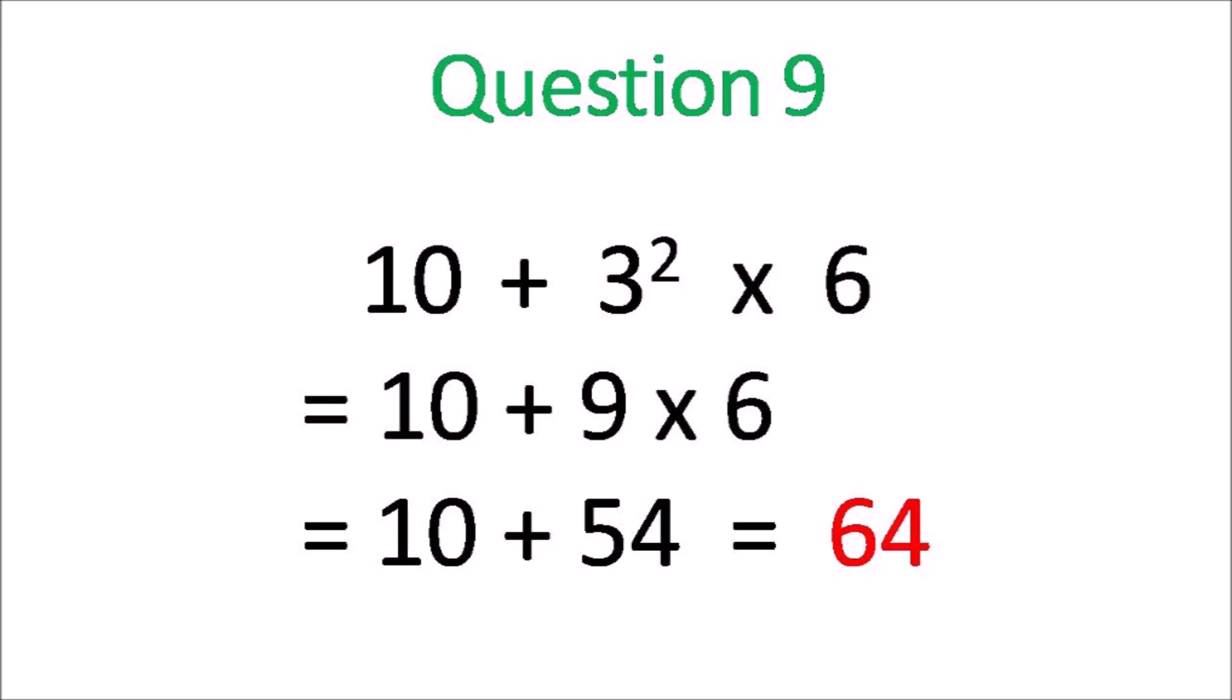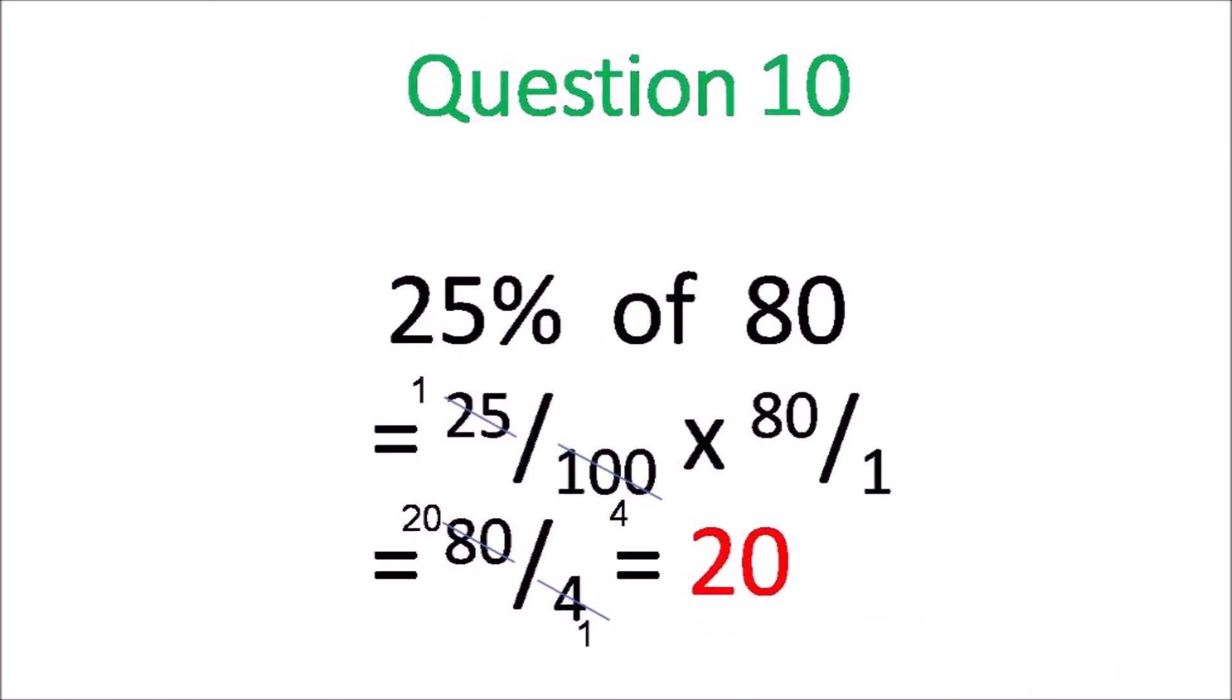Question 9. You have to work out 3 squared first which is 9, and then multiply it by 6 before you add, and you get 64.